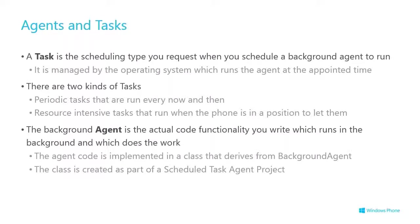So agents and tasks: the task is the scheduling object you're going to use to register your background agent functionality with the OS for later execution — either a periodic task or resource intensive. The agent is the code that you write which the task executes at the appropriate time in the background. You don't control that time — it's relative to what the OS believes is appropriate. Your application can only have one background agent paired with it, but it can be run in both modes.